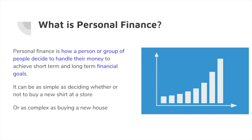For example, it can be as simple as deciding whether or not you should buy a new shirt, and as complex as deciding how and when you're going to buy a new house.